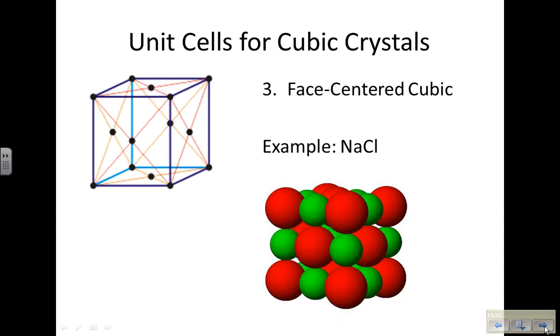Our third and final type for cubic crystals is called a face-centered cubic. Notice the atom is now on the face of the cube in the center of it. Sodium chloride expresses a face-centered cubic unit cell. If you look at this outside of the space-filling model, notice the vertices are chloride, the big red ions, and in the center is another chloride ion.